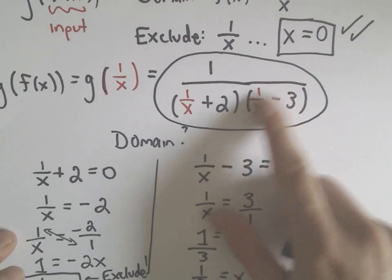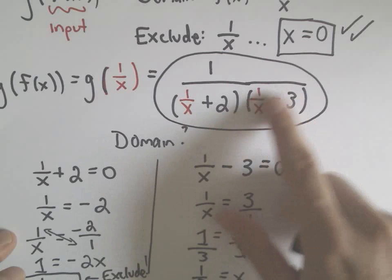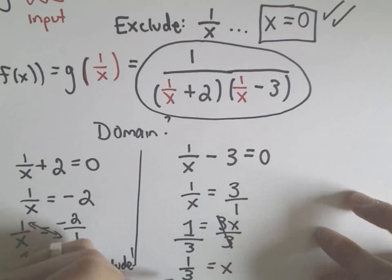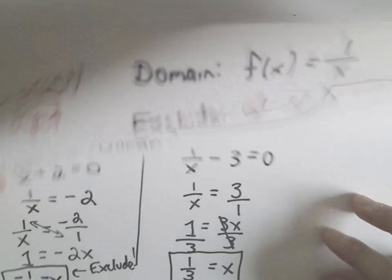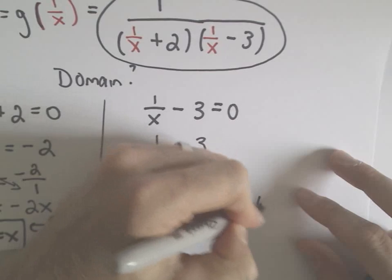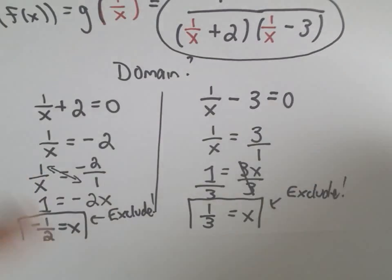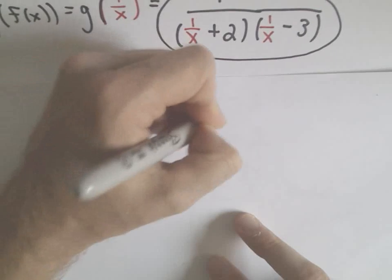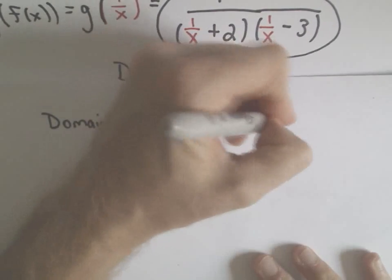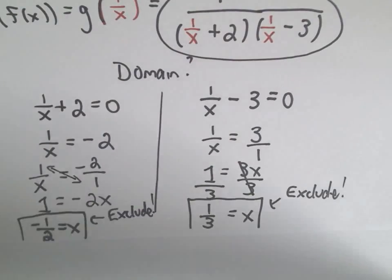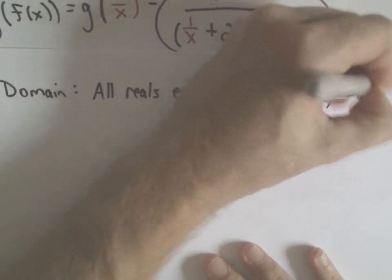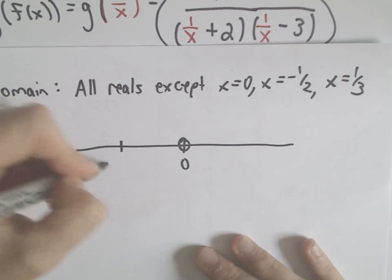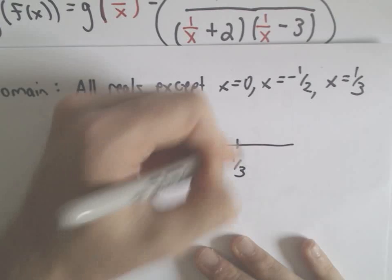You can check if you plug 1 third into the second set of parentheses, you'll be left with a 0 inside the parentheses after you do the arithmetic. And 0 times anything is 0. So that would make the denominator of our composition 0, so we also have to exclude this value. So in this case, our domain will be all reals except x equals 0, x equals negative 1 half, and x equals 1 third.